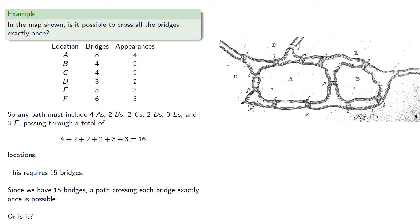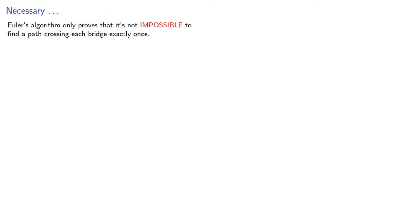Or is it? Actually Euler's algorithm only proves that it's not impossible to find a path crossing each bridge exactly once. Yes, we would call this a necessary condition. But just because it's not impossible, it doesn't mean that it is possible. For that, we'll need to introduce more graph theory.